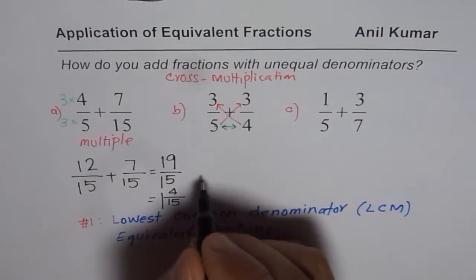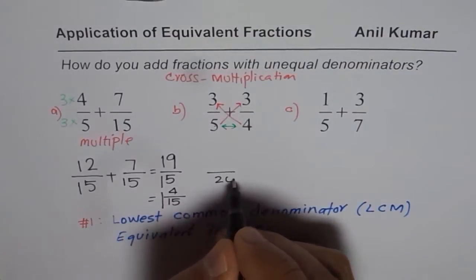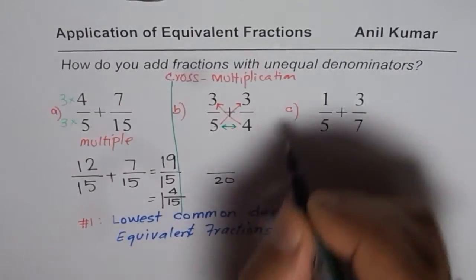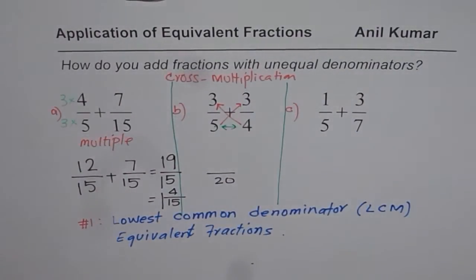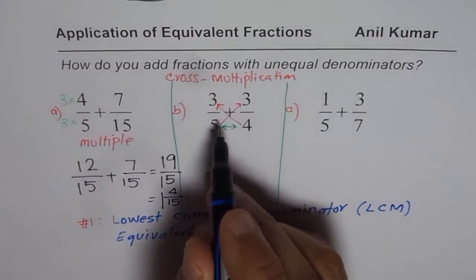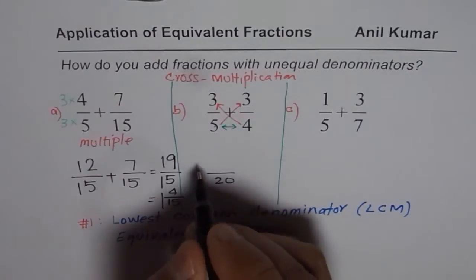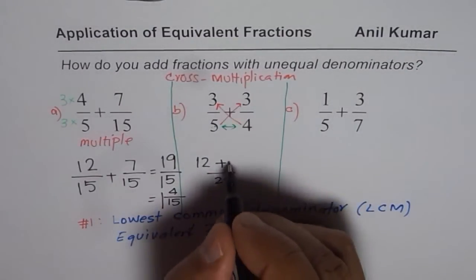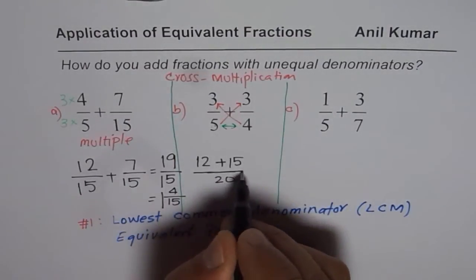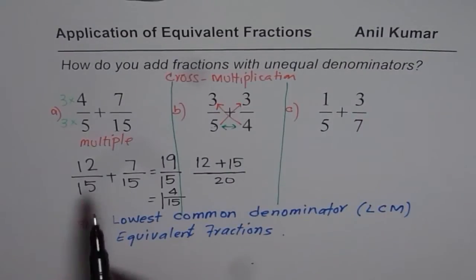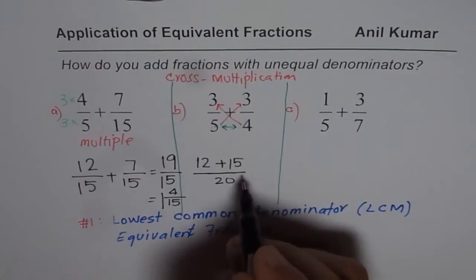So let's cross multiply. Five times four is 20. So we have 20 for five times four. Four times three is 12. So let me write down 12 for the first one plus five times three is 15. So same denominator, common denominator is 20. Now let's add them.